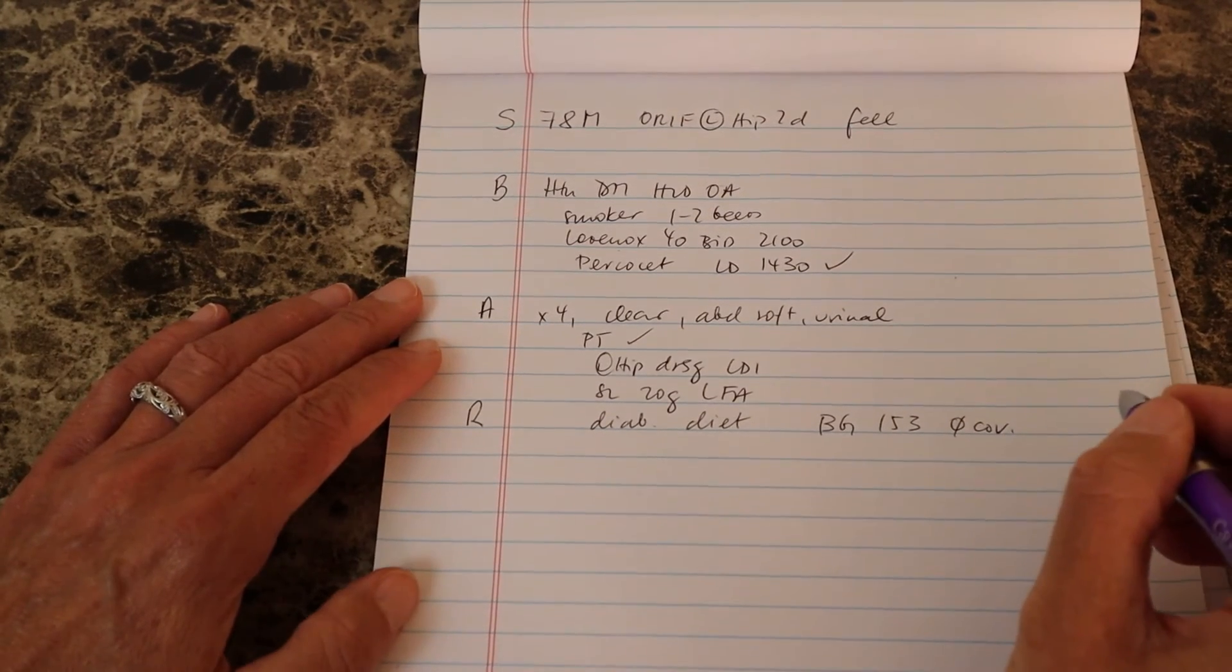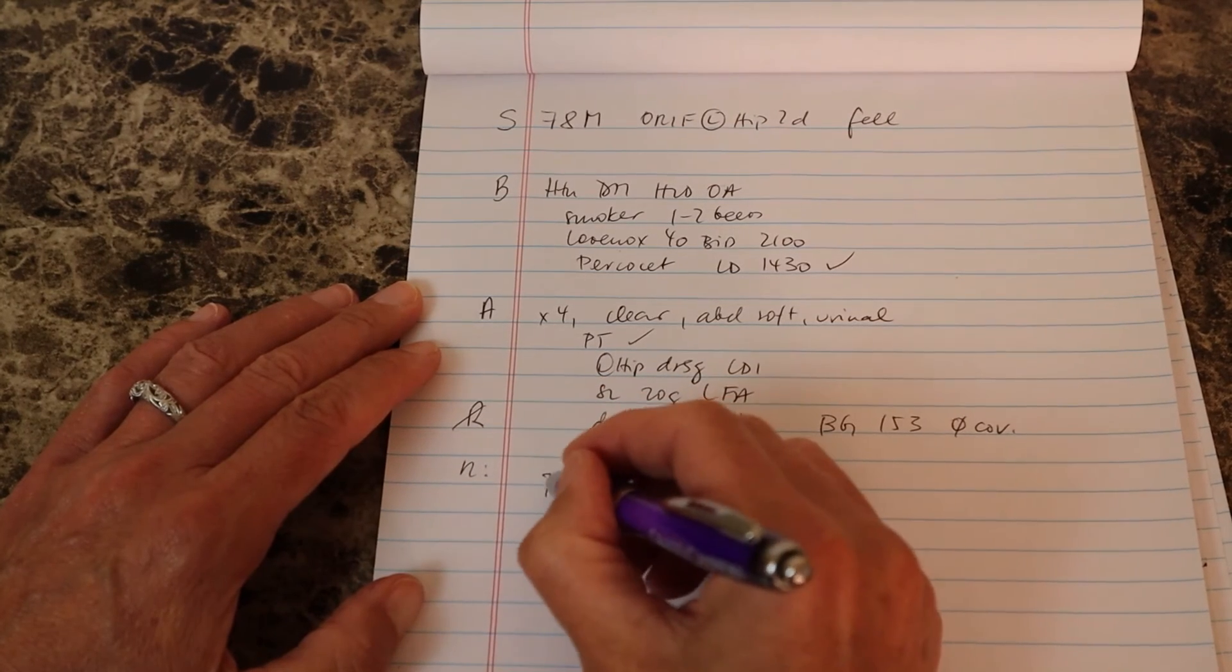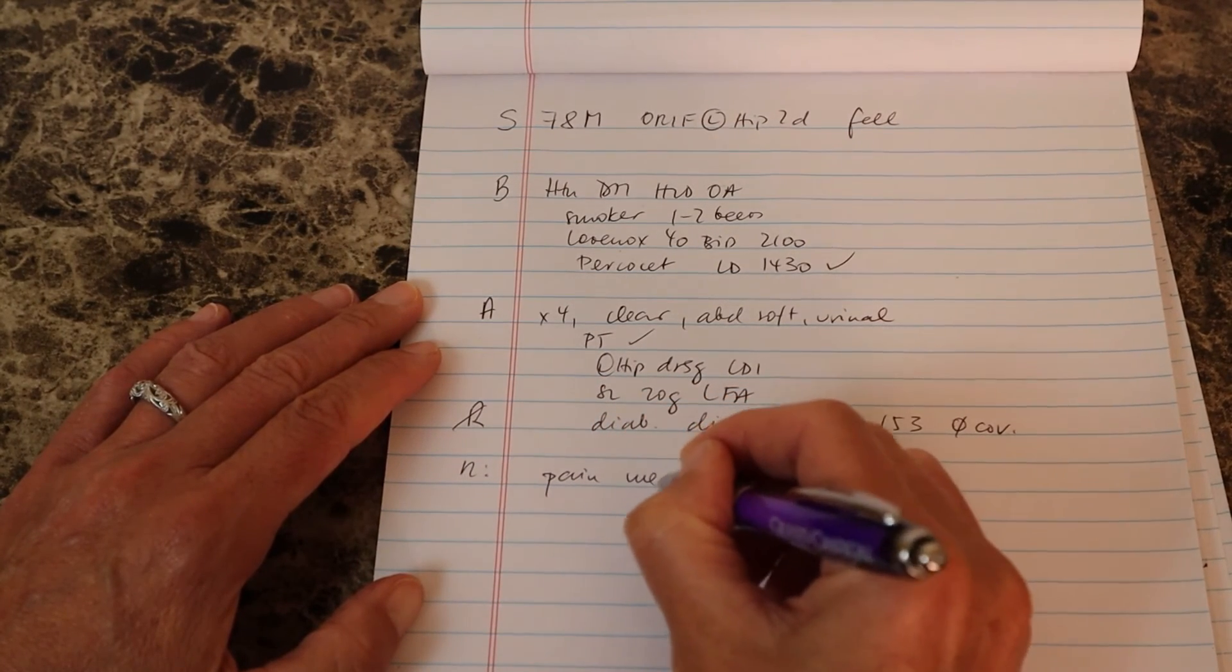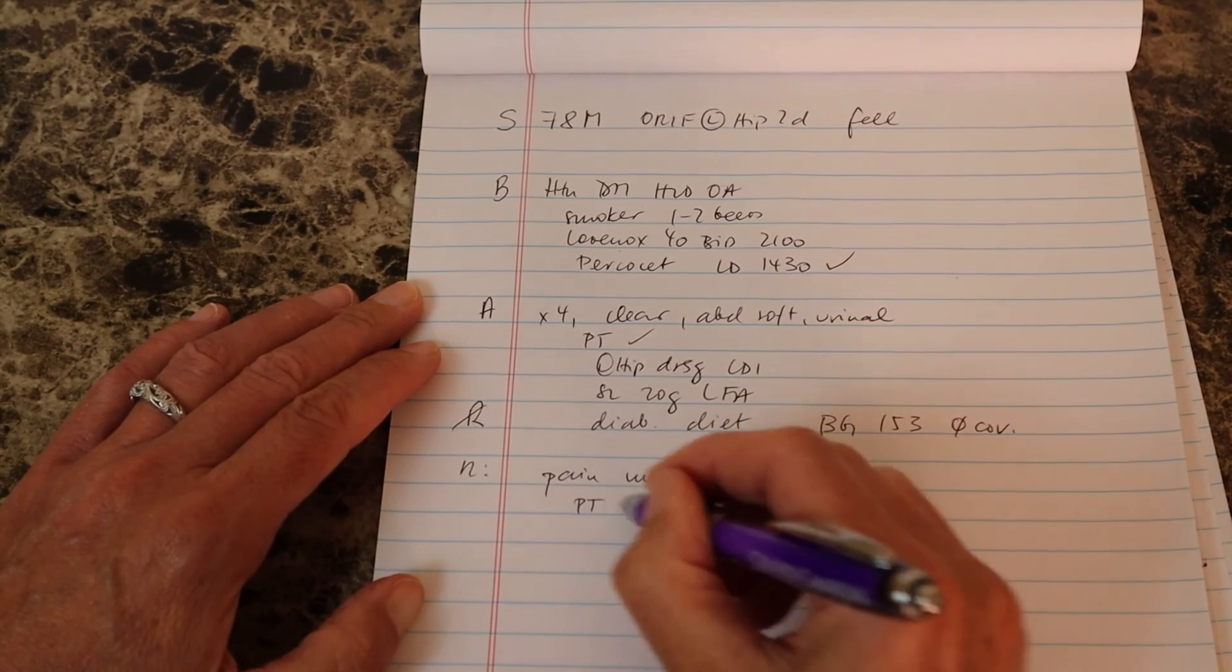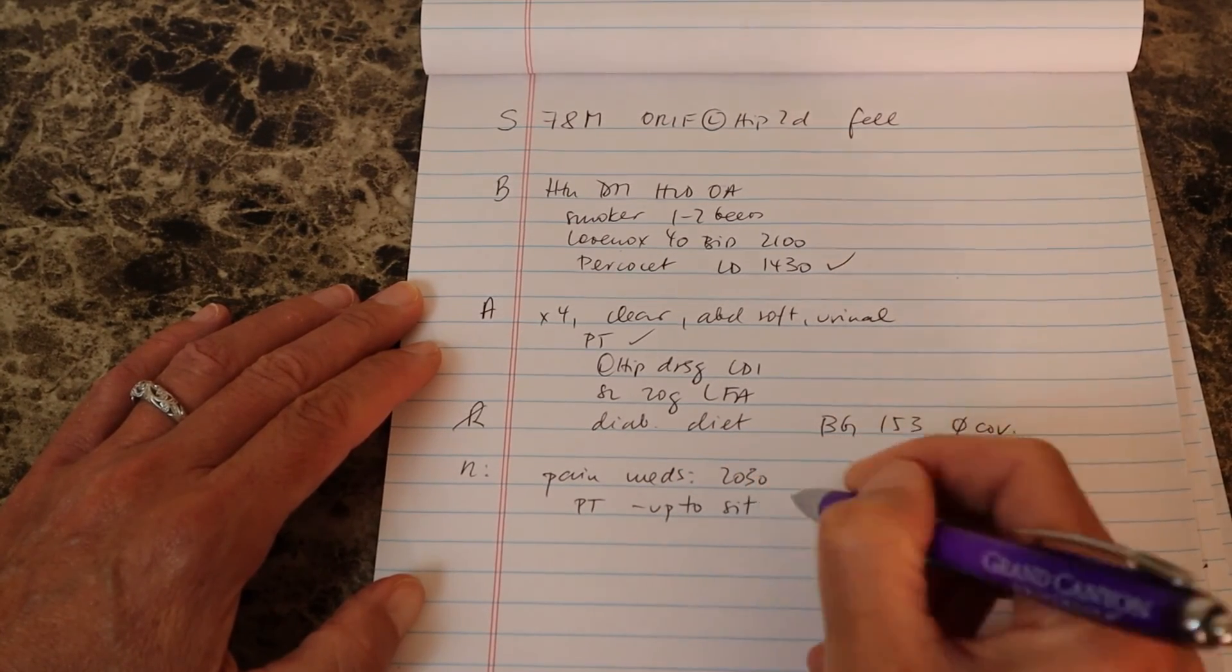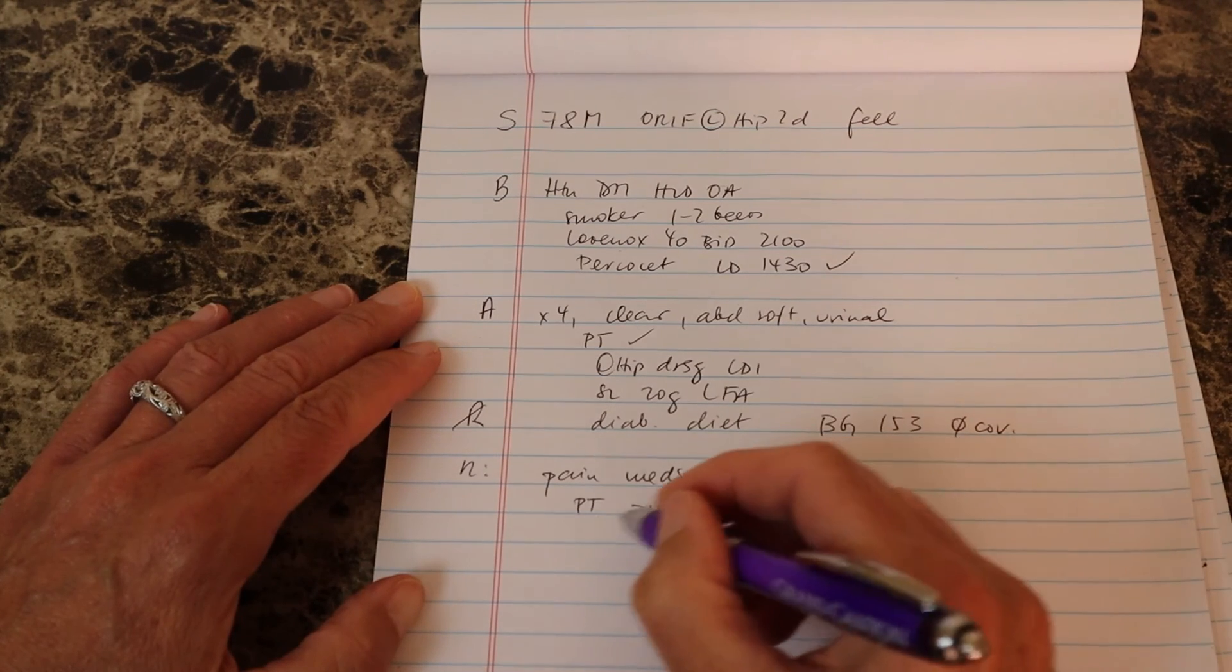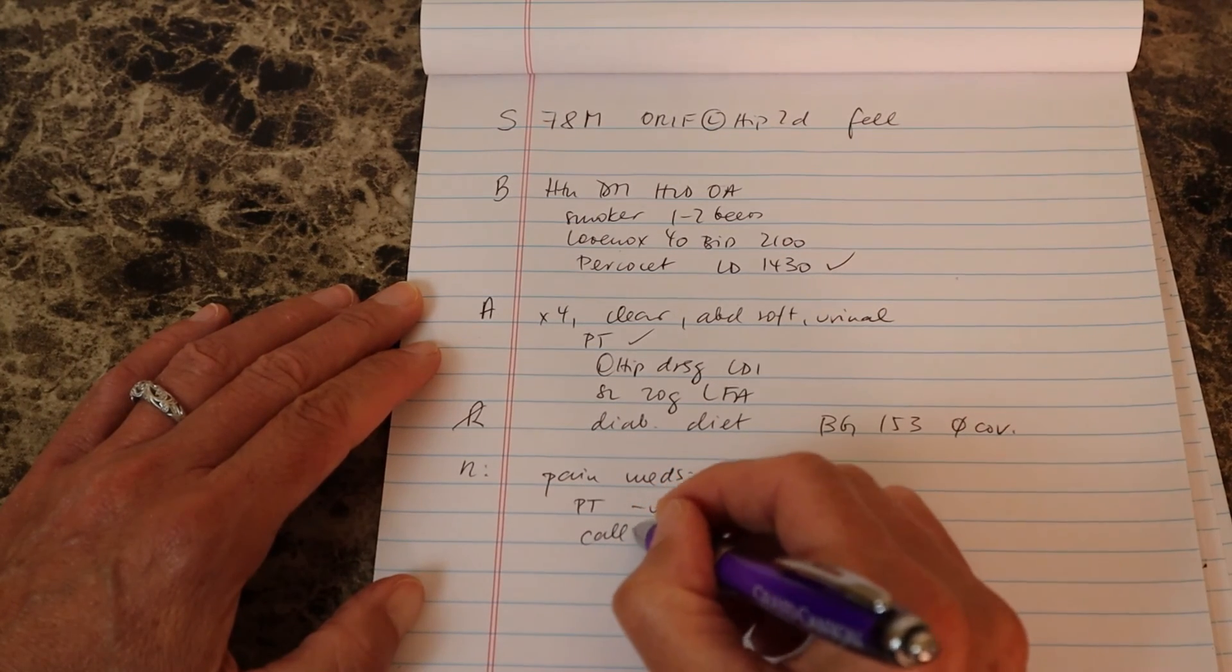So what needs to be done for him. PRN pain meds, he can have it again in six hours so at 8:30. Get him up with PT. You might want to get him up to sit and watch TV at night and he's actually able to call for assistance in case he needs anything. Any questions?